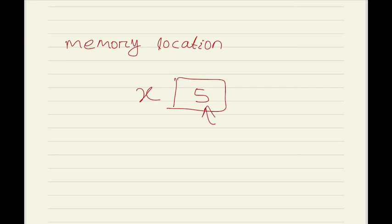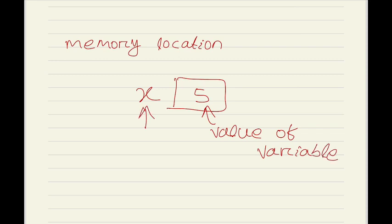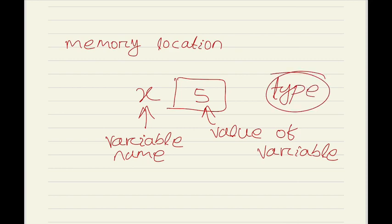Here we can say 5 is the value of the variable and x is the variable name. A variable also has a type that indicates what sort of data it can hold. Each variable has a type, and we have different types that indicate the category of data a variable can store.